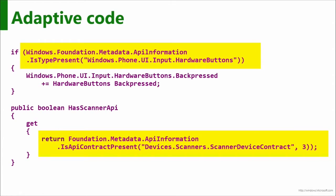The bottom example there has the scanner API. This is kind of different — one of the other APIs in API information is API contract present. This is saying, okay, has this device got a scanner, and is it version 3 of that? So this isn't which device am I running on — this is how much capability does this one device have, and I can add more functionality to my app. So it's very flexible.